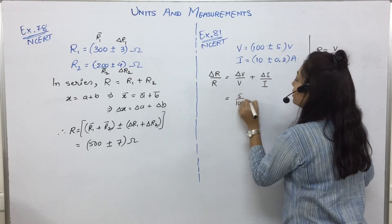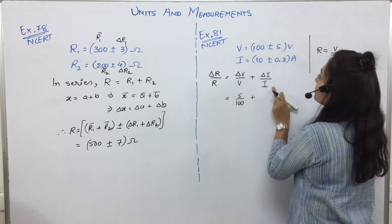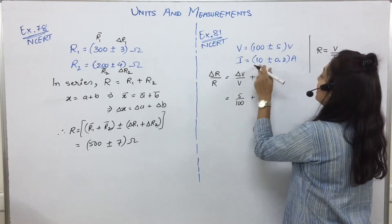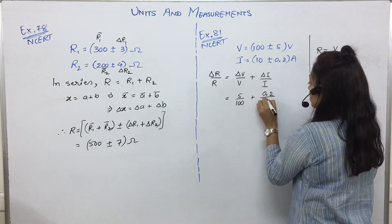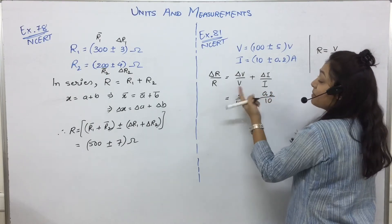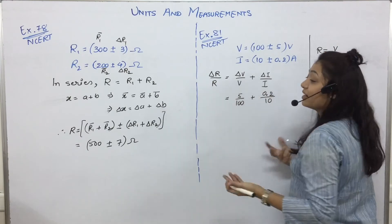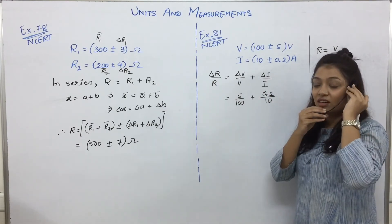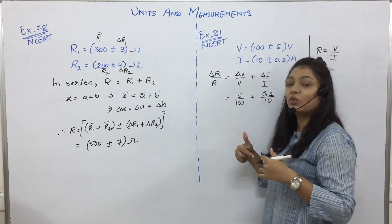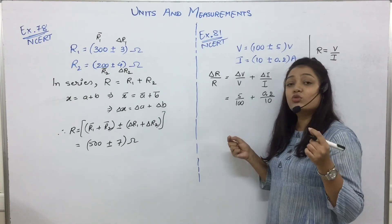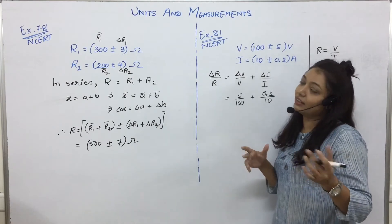So 5 upon 100 plus delta I by I. This is delta I, this is I. So 0.2 upon 10. See, yaha pe V bar nahi likha, I bar nahi likha, R bar nahi likha, it's fine. Does not matter. You should know the meaning of what we are writing, that's all.